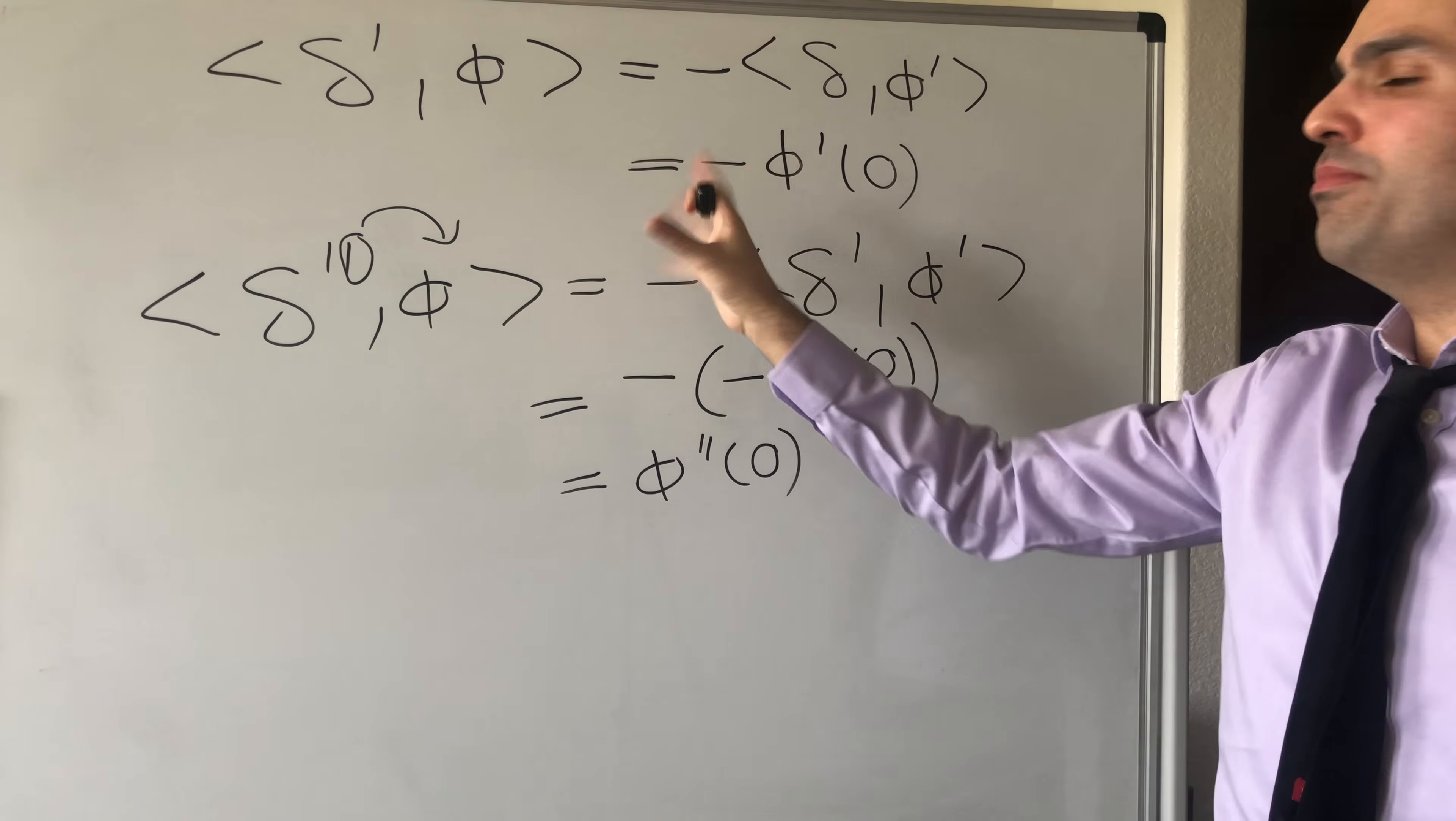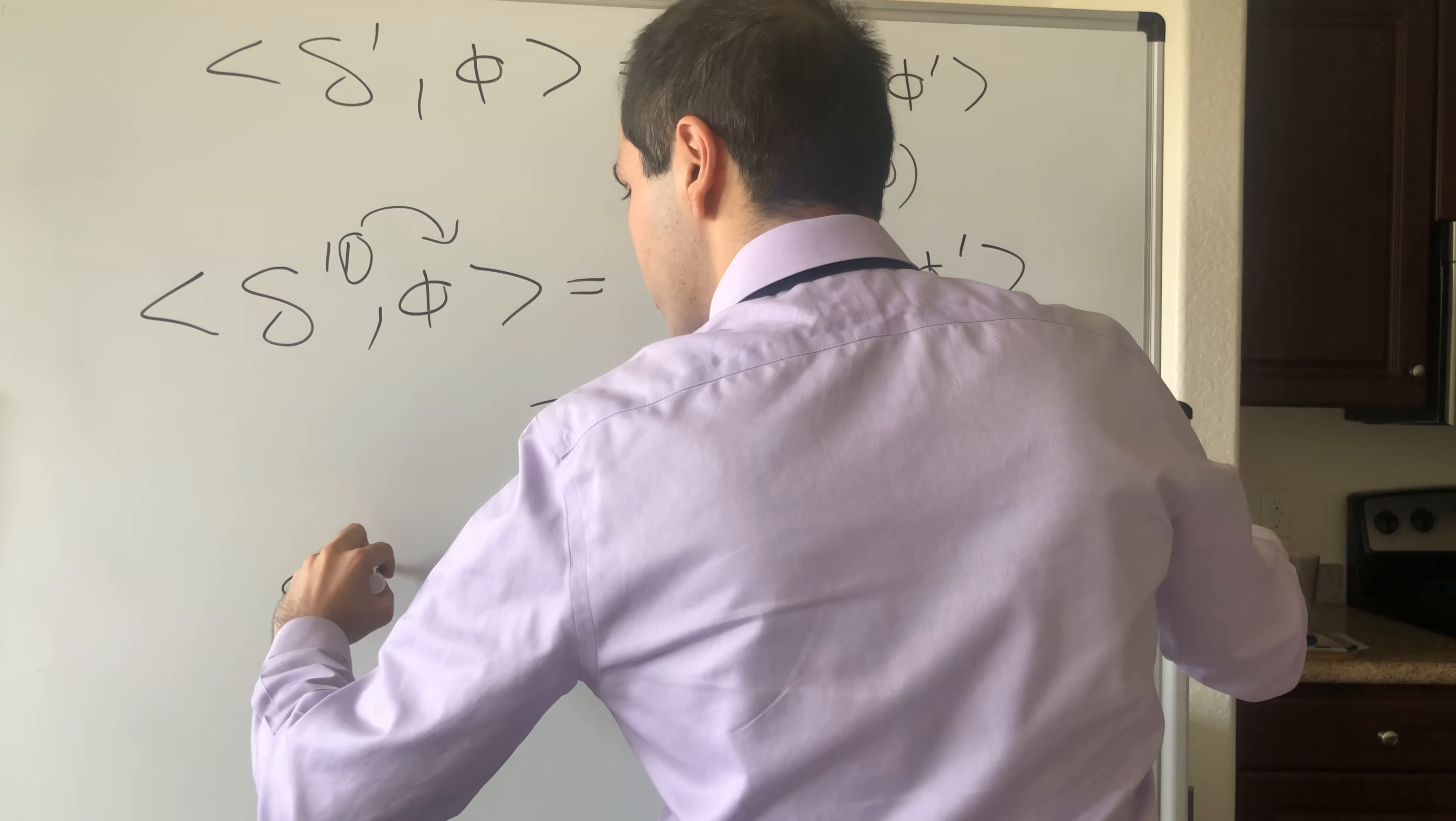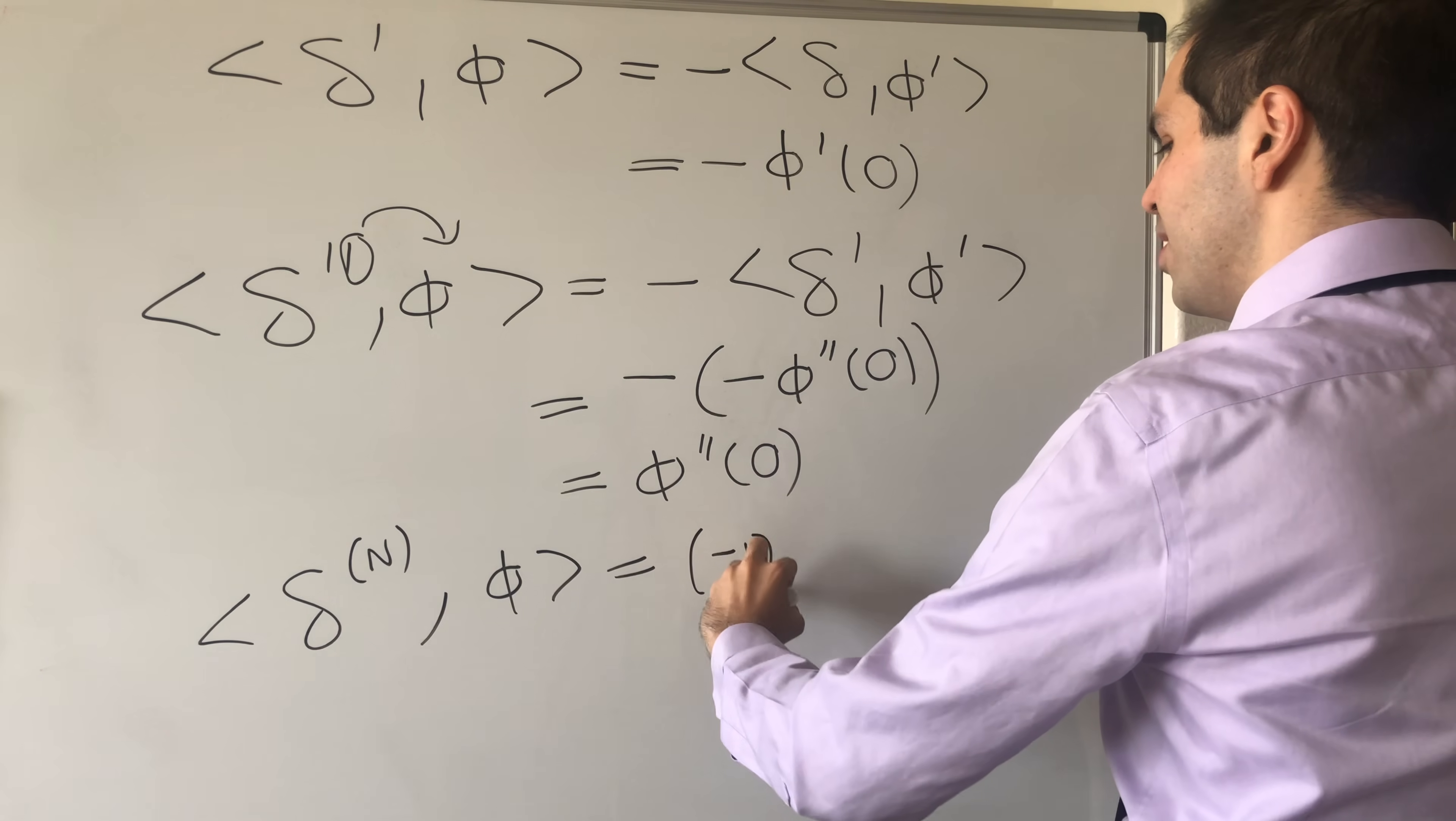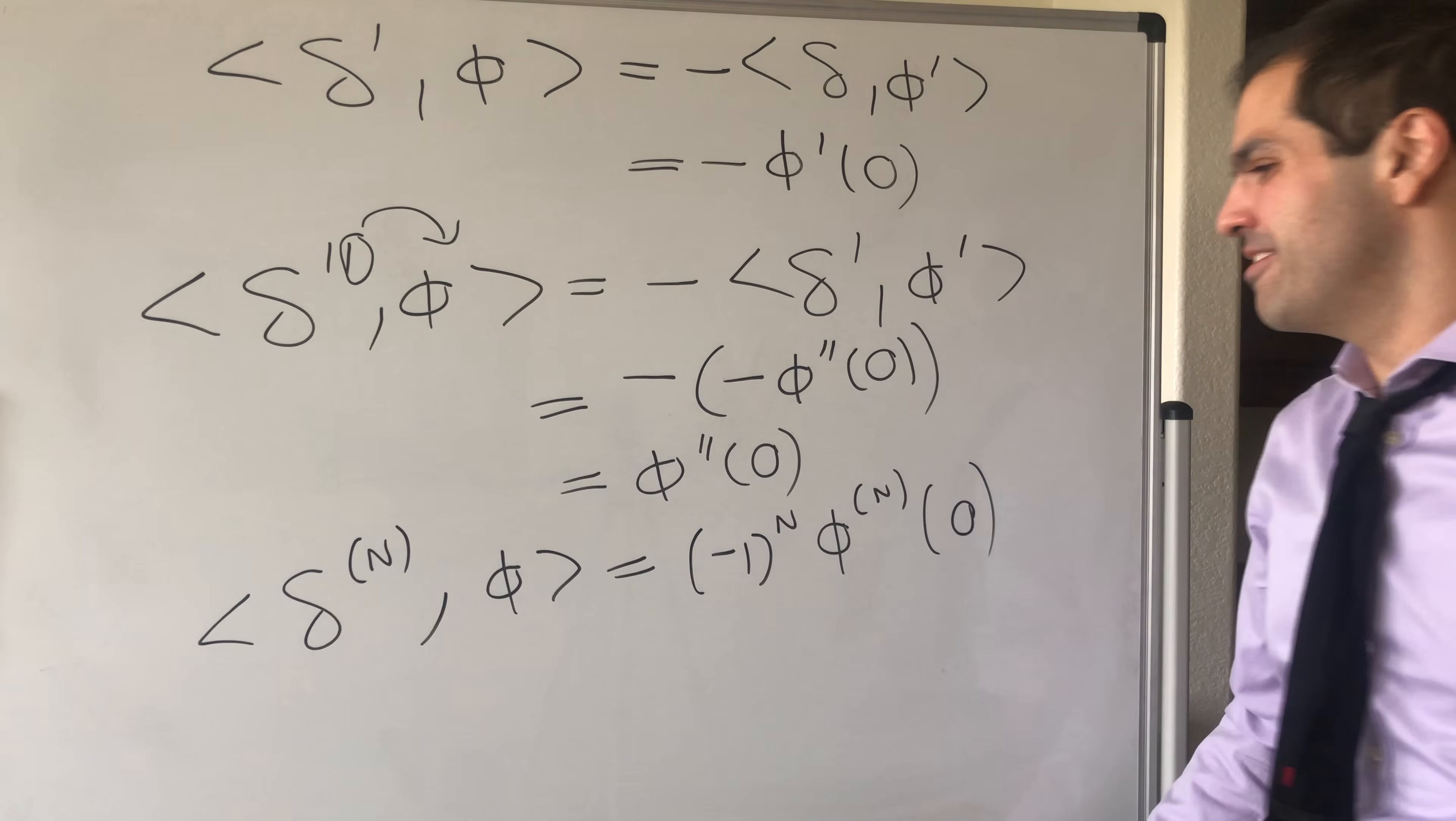And in fact, you can see by this flipping sign and derivatives thing that you can just define the derivative of the Dirac delta, so the higher order derivative, simply as follows: the nth derivative of the Dirac delta applied to phi is just, I believe, minus one to the n of the nth derivative of phi applied to zero. So in fact, even though the Dirac delta is not a function, it is in fact infinitely differentiable.